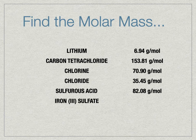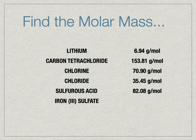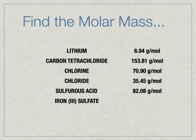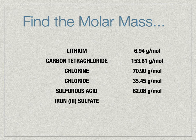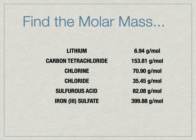Iron(III) sulfate. Iron is 3⁺; sulfate is SO₄²⁻. You need two irons and three sulfates: Fe₂(SO₄)₃. That gives you 12 total oxygens, three sulfurs, and two irons — a lot going on. If you added those up correctly you got 399.88 grams per mole.